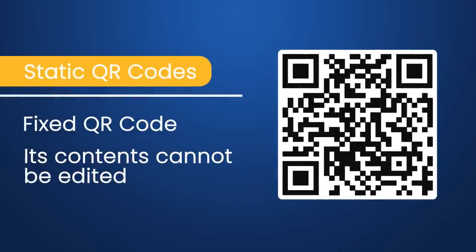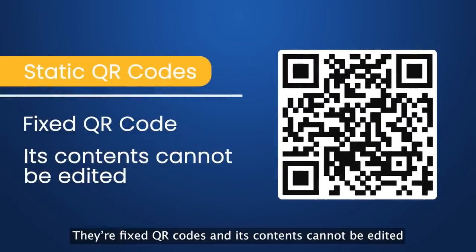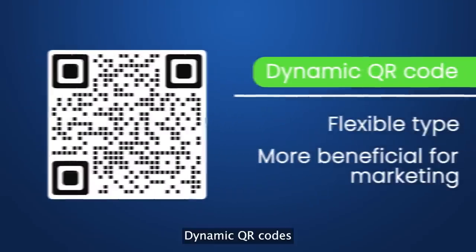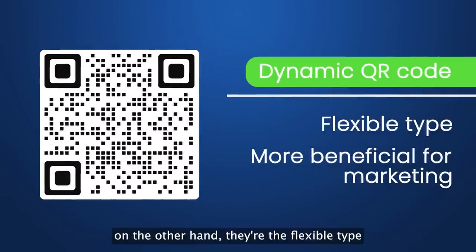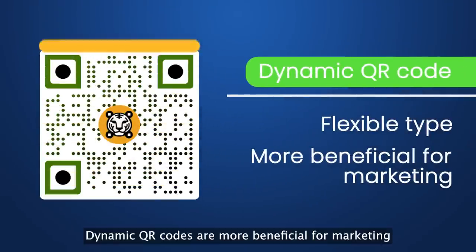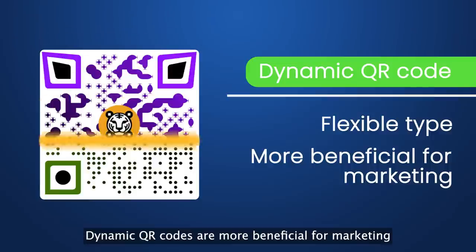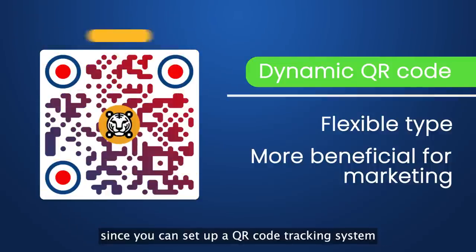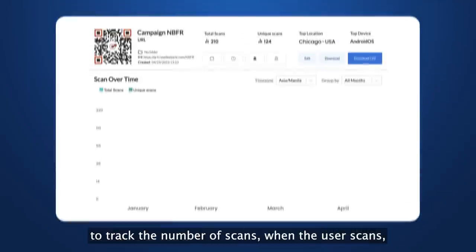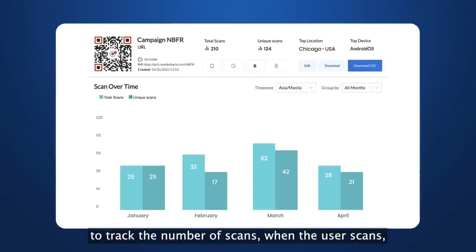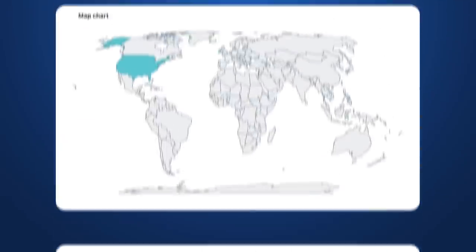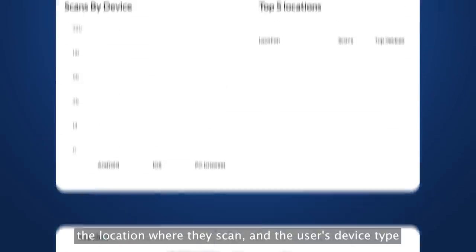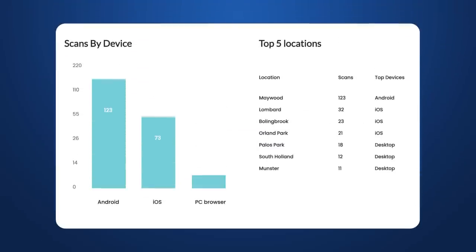Static QR codes are fixed QR codes and their contents cannot be edited. Dynamic QR codes, on the other hand, are the flexible type. Dynamic QR codes are more beneficial for marketing, since you can set up a QR code tracking system to track the number of scans, the location where they scan, and the user's device type.